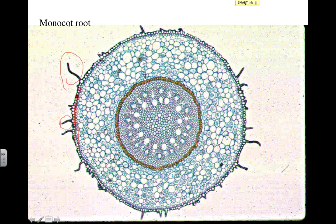This central layer of the root is going to be the cortex. A lot of it is going to be for storage of sugars, and it's also going to be for transport of water into the vascular cylinder. The vascular cylinder is this area that I'm outlining in red. The vascular cylinder is going to contain two main substances: xylem, which are these larger tubes — xylem transports water up to the leaves for photosynthesis. And then you have the smaller tubes, which are phloem, and those are going to transport sugars down into the roots. The sugars are going to be stored out in this cortex layer.